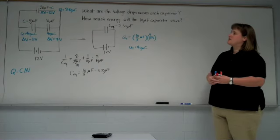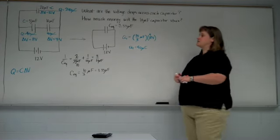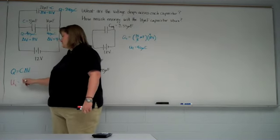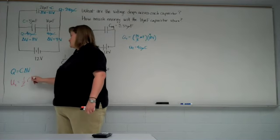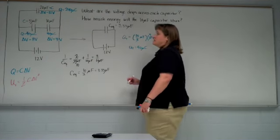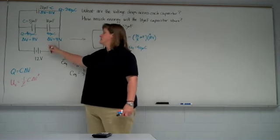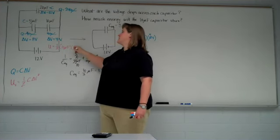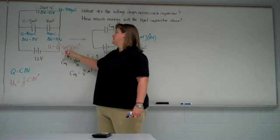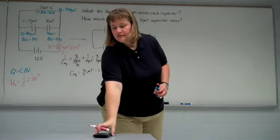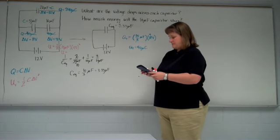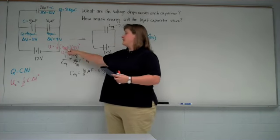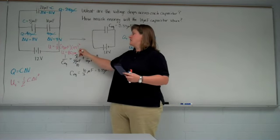The second question I ask is how much energy the 10 microfarad capacitor will store. The stored energy by a capacitor, many ways to write it. One way is one half C delta V squared. We know the capacitance. Capacitance is 10 microfarads. Delta V is 4 volts. We need to square that. Five times 16. 80. We have the micro here so it's still micro and then joules.